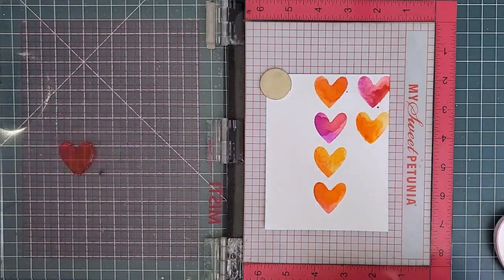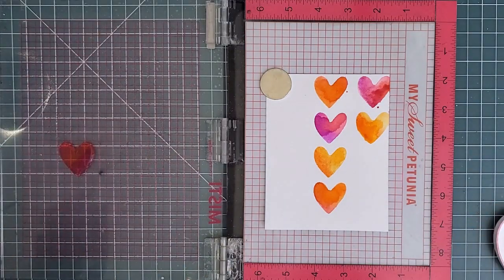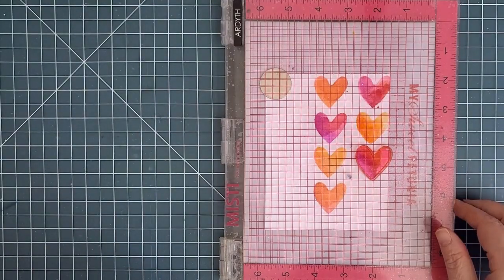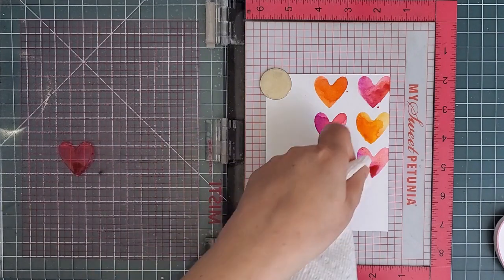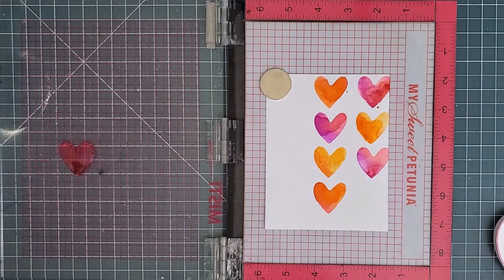Another way would be to use a pencil to lightly draw in grid lines so you would have an approximate idea of where to stamp your heart each time. Then you just erase the lines when everything's dry at the end.